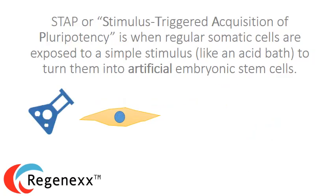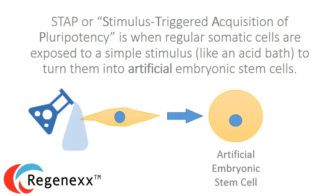STAP, or stimulus-triggered acquisition of pluripotency, is when regular somatic cells are exposed to a simple stimulus like an acid bath to turn them into artificial embryonic stem cells.